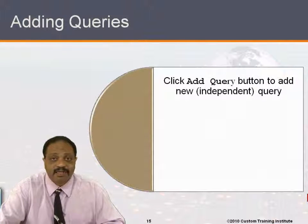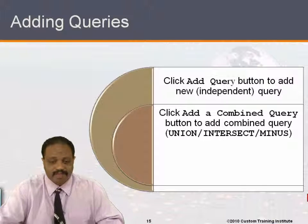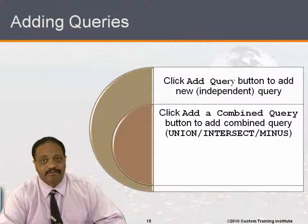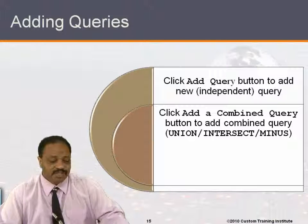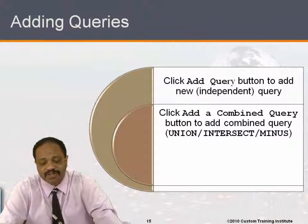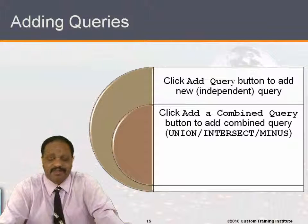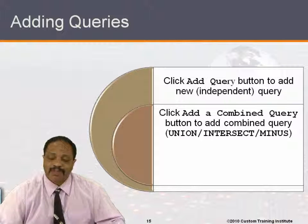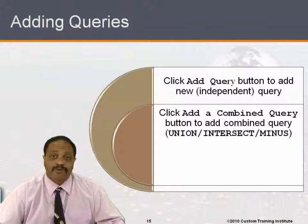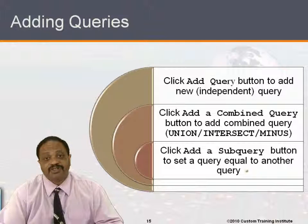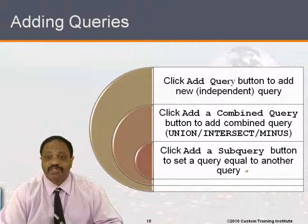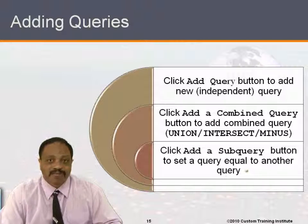Clicking the Add Query button allows you to add a new independent query. Clicking the Add a Combined Query button allows you to add a combined query — one that uses the union, intersect, or minus keywords, which take two different select statements and combine their results. For example, 'select something union select something else.' Clicking the Add a Subquery button allows you to set one query equal to another query, such as 'select something where x equals (select something else).' That's adding a subquery.